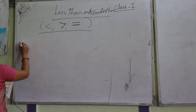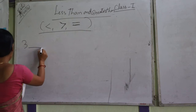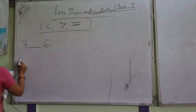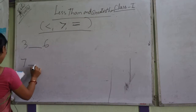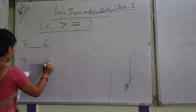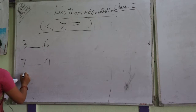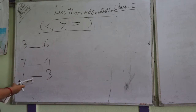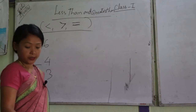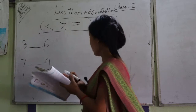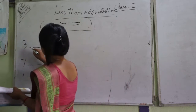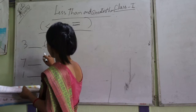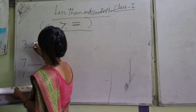For example: three. This symbol is six. Next symbol is seven and four. Next symbol is one and three. This symbol is less than and greater than. Three is less than six.